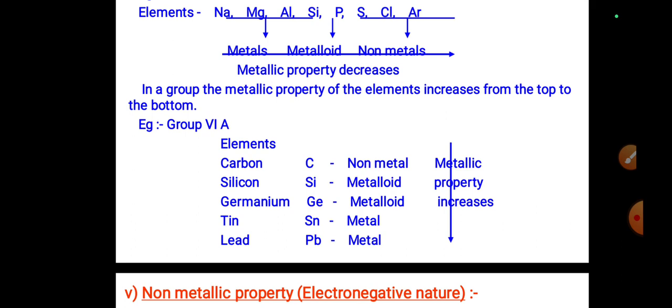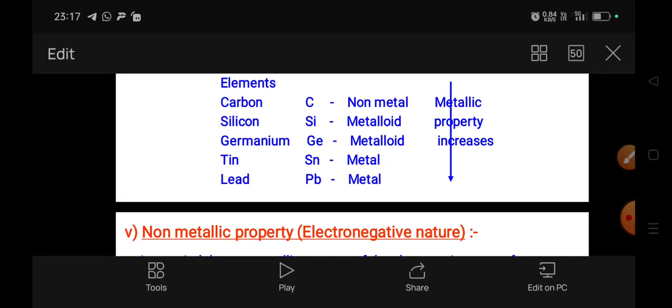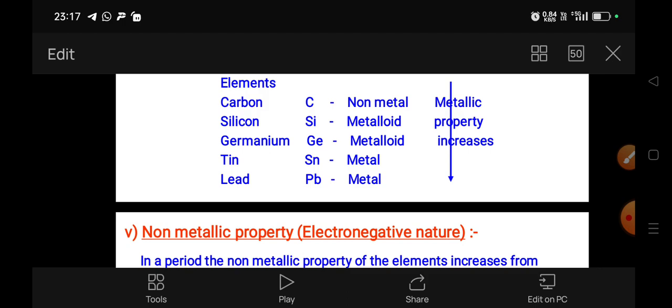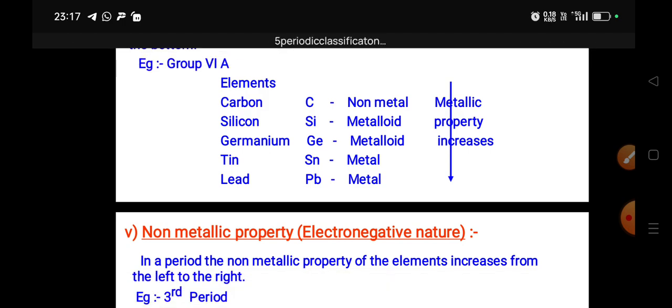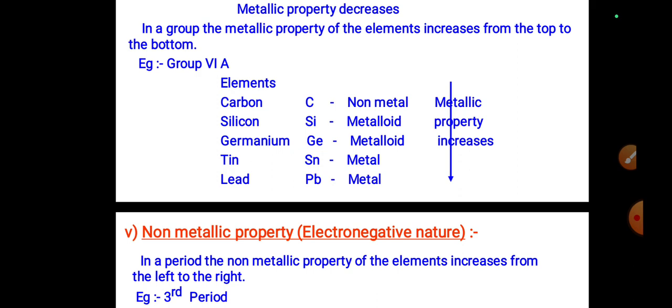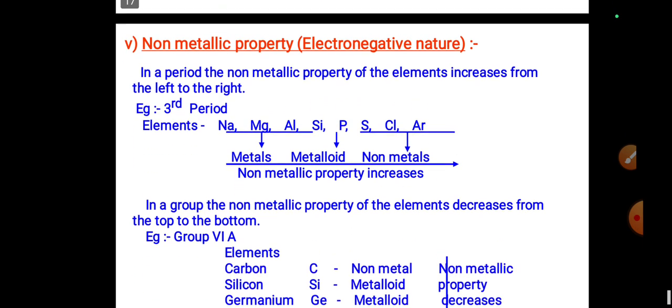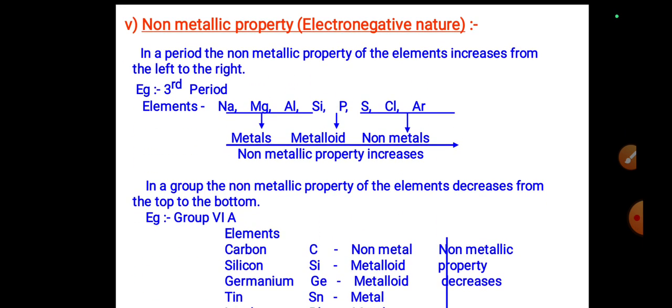In a group, the metallic property of elements increases from top to bottom. For example, in the carbon group: carbon, silicon, germanium, tin, lead — as we go from top to bottom, metallic property increases.